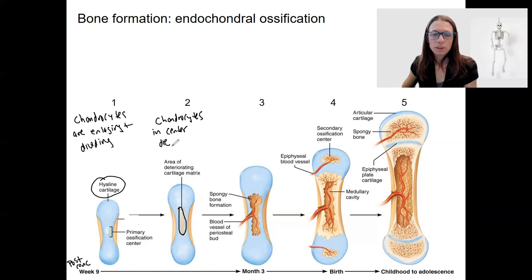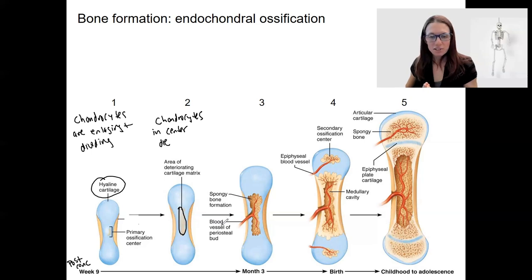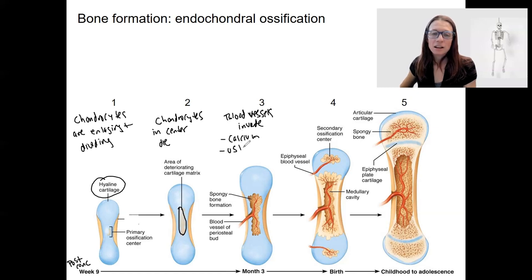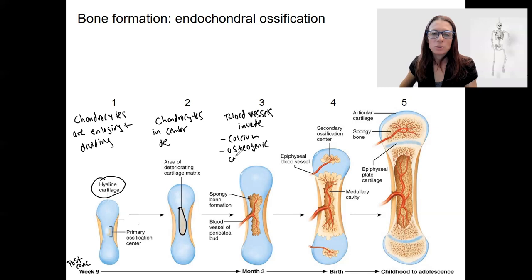When the chondrocytes die, around that time blood vessels begin to invade. That is important for a couple of reasons: bone is vascular, so we have to have blood vessels there. But these blood vessels also bring in calcium and osteogenic cells. Osteogenic cells are going to develop into osteoblasts, and now we have a way to form bone.